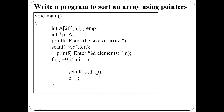Initially p points to the array starting location, a[0]. The element at a[0] is read. Then p is incremented to point to a[1]. Next iteration: data at a[1] is read. p is incremented to point to a[2]. This process continues n times.